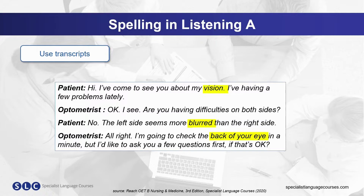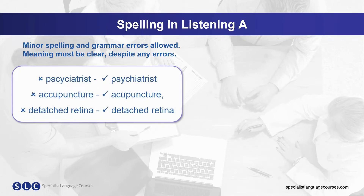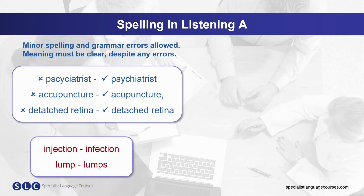You can also use the Listening A transcripts to build up your knowledge of useful language for the 12 professions. Minor spelling and grammar errors are allowed in Listening A, but the meaning must be clear despite any errors. For example, psychiatrist, acupuncture, and detached retina may be spelled incorrectly but the meaning is still clear. However, spelling errors which change the meaning of the word are not allowed — for example, writing 'injection' instead of 'infection'. And be careful of plurals, as having one lump is very different to having multiple lumps.